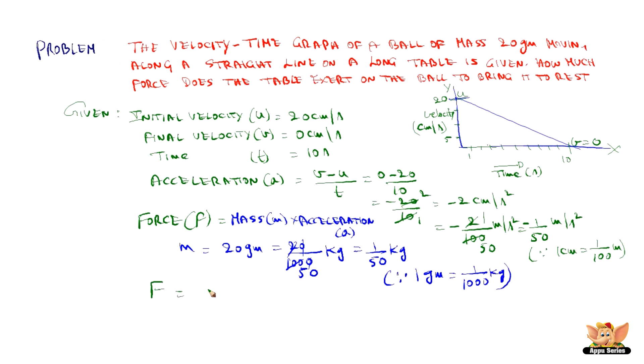So F is equal to mass 1 by 50 into the acceleration a is equal to minus 1 by 50 meter per second square. So this becomes minus 1 by 2500, which is nothing but minus 0.0004 newtons. So the force that is required to follow the motion on this straight line graph is minus 0.0004 newtons.